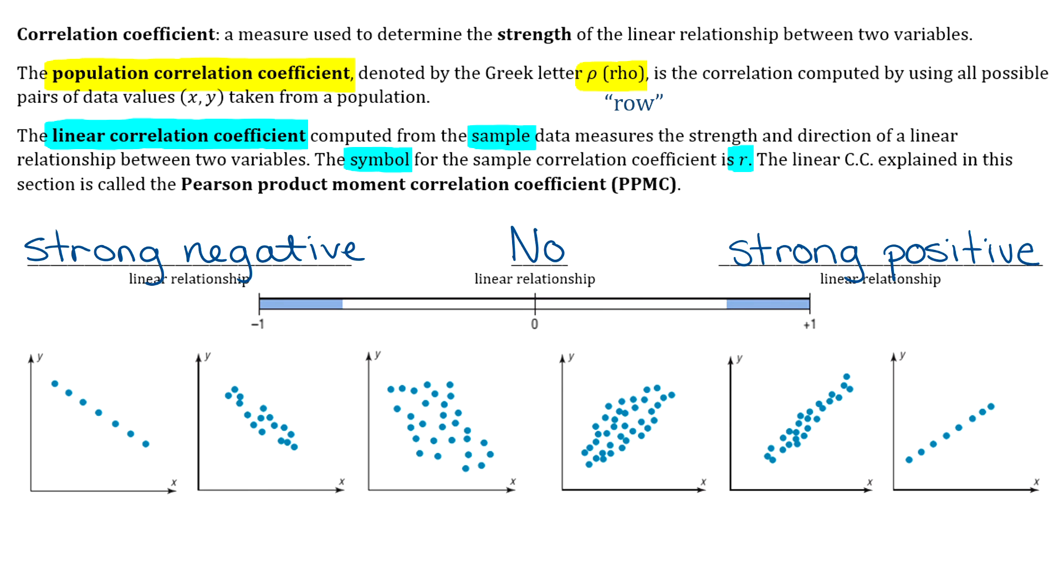So I have some examples here of different scatter plots, and let's just kind of estimate what we think r might be just by looking at those plots. So this first one here, we can see that that definitely looks like a linear relationship. Those points are in a very straight line, and we see that it's negative. In fact, I don't think that could be a more perfect line. So I would say r for that would probably be about negative 1. So that's a very strong negative linear relationship.